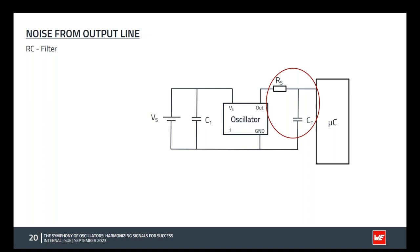Another option recommended as a mounting option is the RC filter. It's usually a cheap filter but in most cases sufficient — providing around 20 dB attenuation. The resistor is not as high quality as a dedicated filter component, so attenuation is around 20 dB.